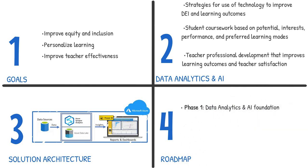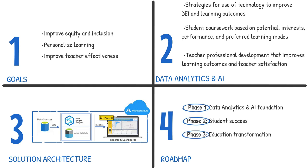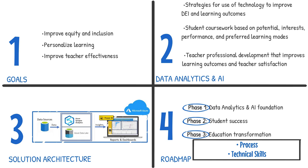For example, the first phase of your roadmap may start with establishing a data analytics and AI foundation in the cloud. Then phase 2 might focus on data analytics and AI for student success and improved learning outcomes. And phase 3 could focus on using data analytics and AI to enable system-wide education transformation that includes optimizing workflows, making curriculum content more engaging, creating more effective policies, and much more. Once these items are complete, Microsoft can work with you to implement each phase of the roadmap. By the end of each phase, you will have a process in place and the technical skills to manage and evolve your data analytics and AI solution.